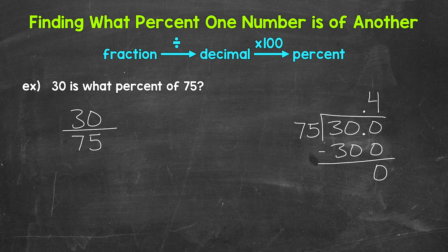We went all the way over within our division problem. So we are done. 30 divided by 75 equals 0.4, 4 tenths.